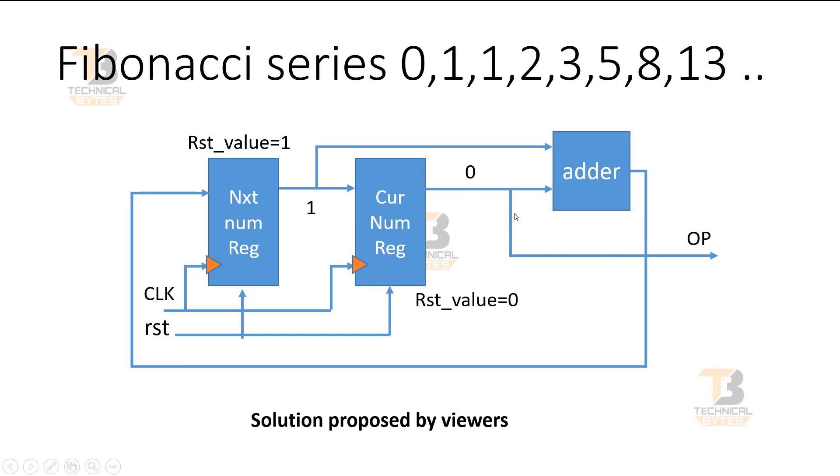So now we are starting with the number 0 and 1. We will get 0 at the output as soon as reset is applied. The adder will add both the inputs, 1 and 0, and will give 1 at its output, and this 1 will be applied at the input of the second register.